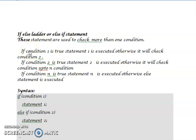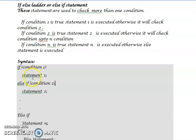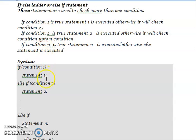As a reminder, if the condition is true then it will execute inside the body of the if statement; if the condition is false then we go to the else statement. Now the definition changes a little bit for the if-else ladder: if condition one is true, statement one is executed; otherwise it will check condition two. If condition one is false, we check the next condition, and if condition two is true, statement two is executed.